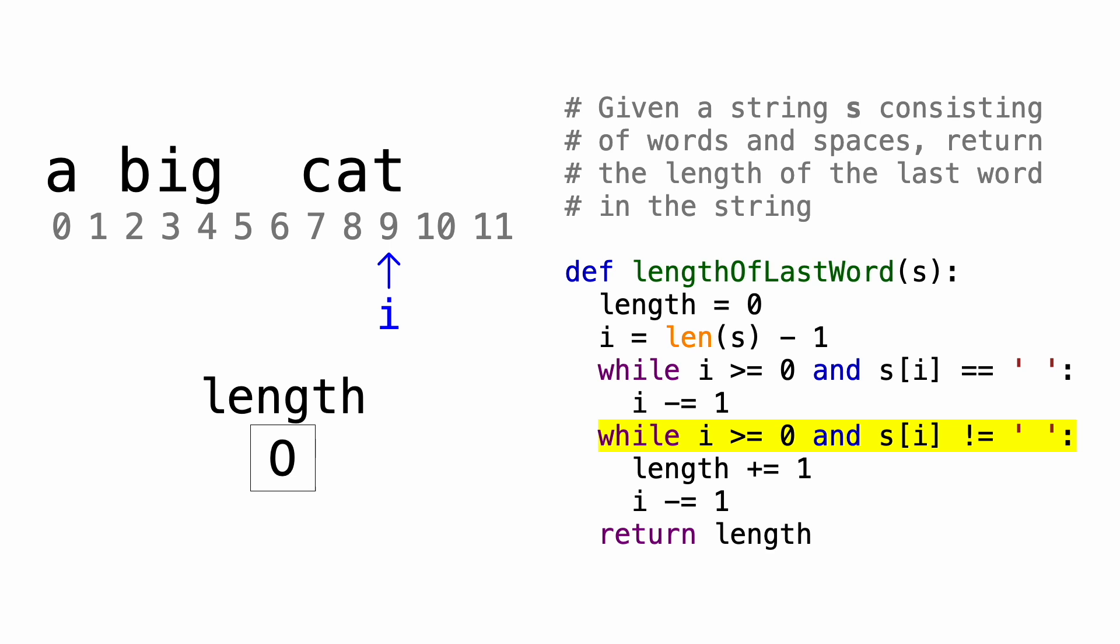So this loop will keep iterating and incrementing the count of length, as long as the character at index i is not a space. We can see that the character at index 9 is indeed not a space, so let's increment length and decrement i. The character at index 8 is still not a space, so we'll increment length again and keep moving backwards. The character at index 7 isn't a space either, so let's increment length to 3 and decrement i again.